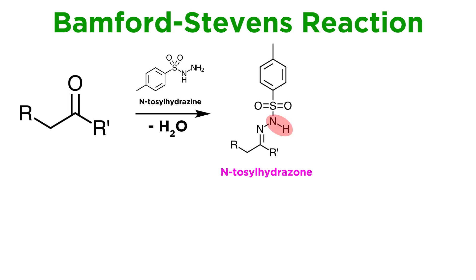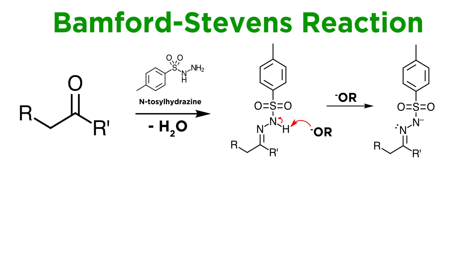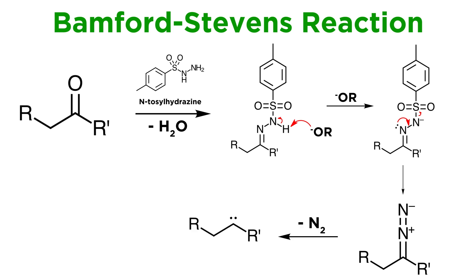This N-H bond is now somewhat acidic due to the potential for resonance if deprotonated, so we can treat with strong base and get the anion. Now elimination can occur, where a lone pair on this nitrogen can generate a pi bond with the other, kicking off the whole tosyl group. At this point things should look quite familiar, and this diazoalkane can evolve nitrogen gas to produce the corresponding carbene.